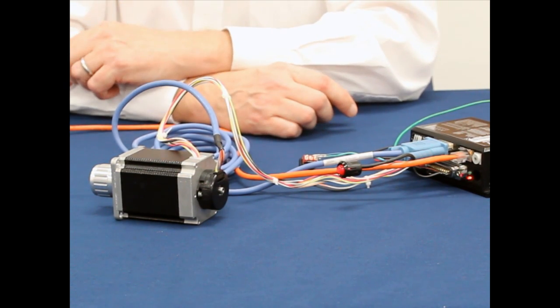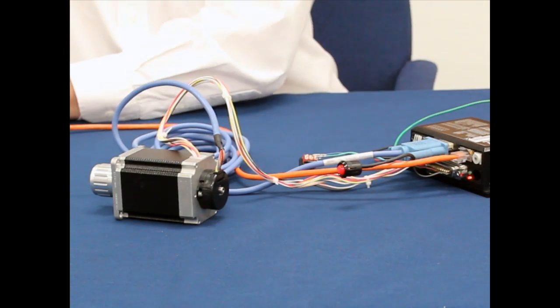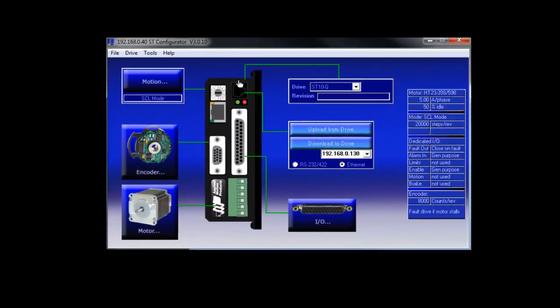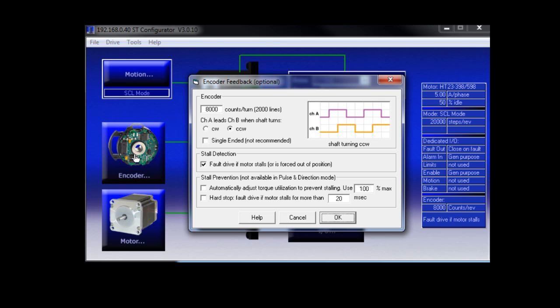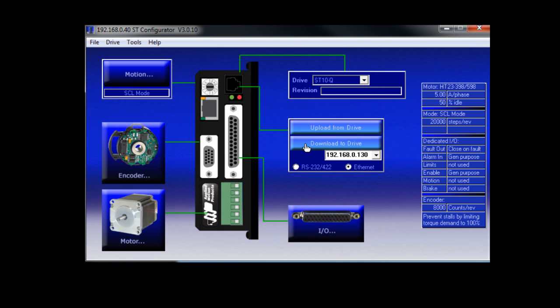Now let's try stall prevention. I'm once again going to open the encoder dialog, but this time I'll check the stall prevention box. Now let's click download and see what happens when we try to stall the motor.